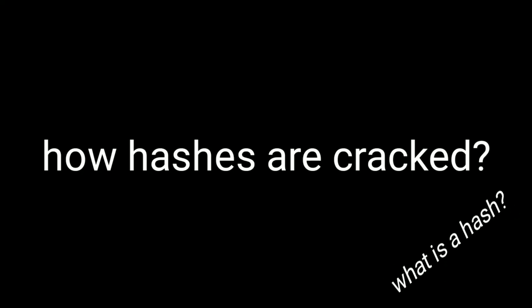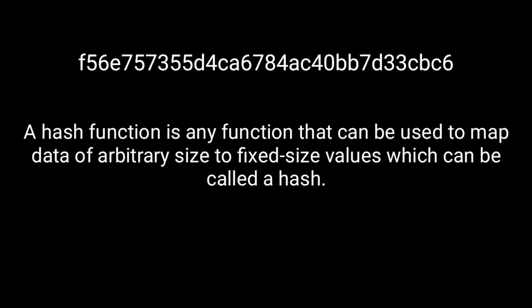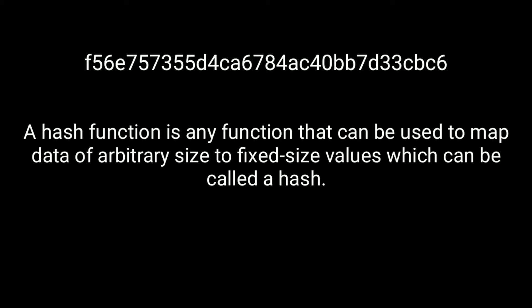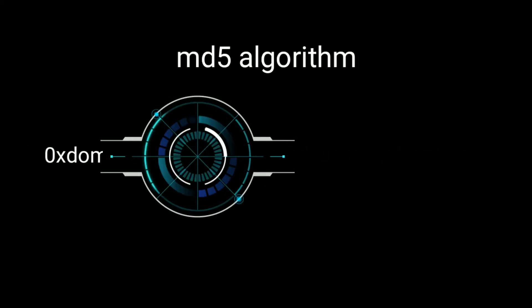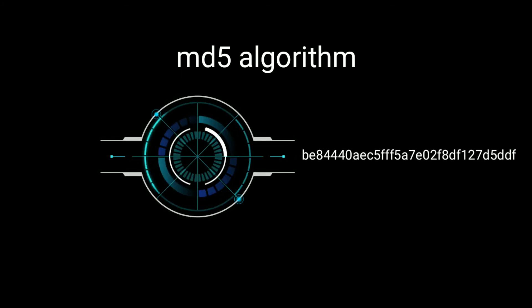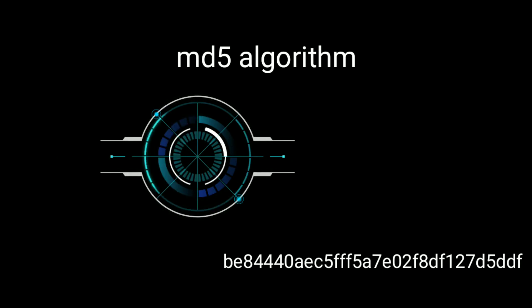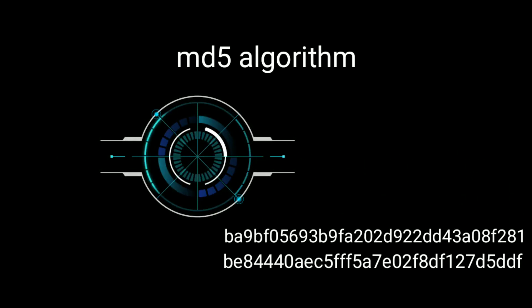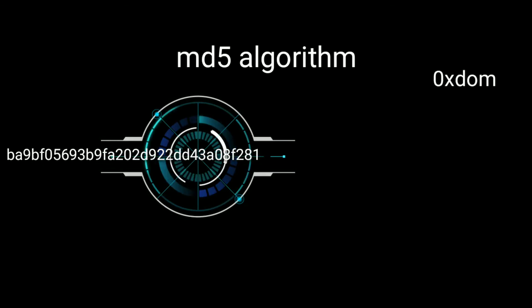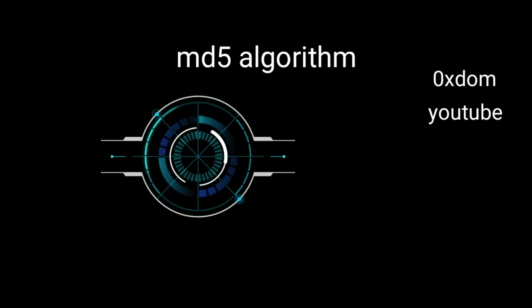Now let's really see how hashes are actually cracked, but before that we need to know what a hash actually is. A hash is a function that can be used to map data of arbitrary size to fixed-size values, called a hash. I made this little MD5 animation — if we hash the word '0xdom' with the MD5 algorithm it produces a fixed-length hash value. If we hash the word 'YouTube,' you can see that both hashes are different.